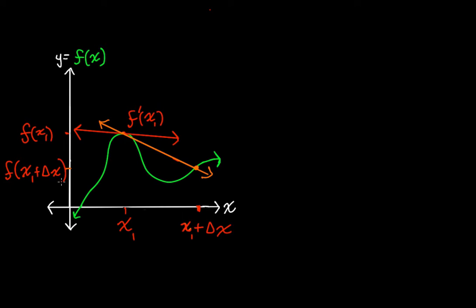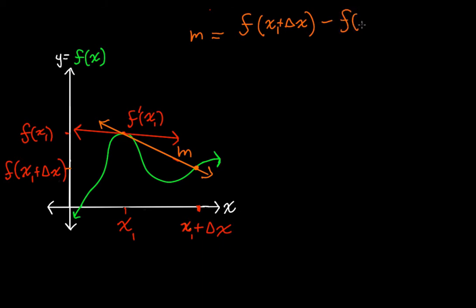What's the slope going to be? I'm going to call this m. We know what m is: m is equal to y2 minus y1 over x2 minus x1. So we take f of x1 plus delta x — that's our y2 — minus f of x1 — that's our y1 — over x1 plus delta x minus x1, which is just delta x. And this is the slope of our secant line.